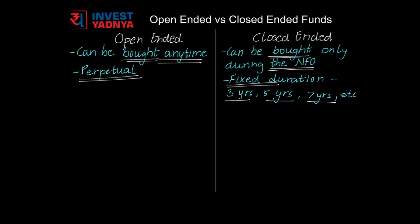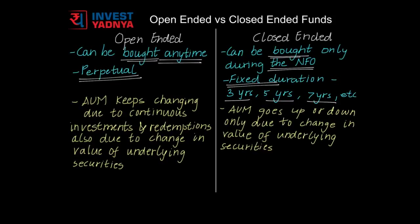In case of open-ended funds, if the fund manager thinks he cannot handle assets under management beyond a certain threshold, the fund house stops accepting any new investments under that fund. As continuous buying is possible, continuous selling of units is also possible, which in turn affects your assets under management. So, the AUM of open-ended funds goes up or down due to continuous investment and redemptions, and also due to change in the value of underlying securities.